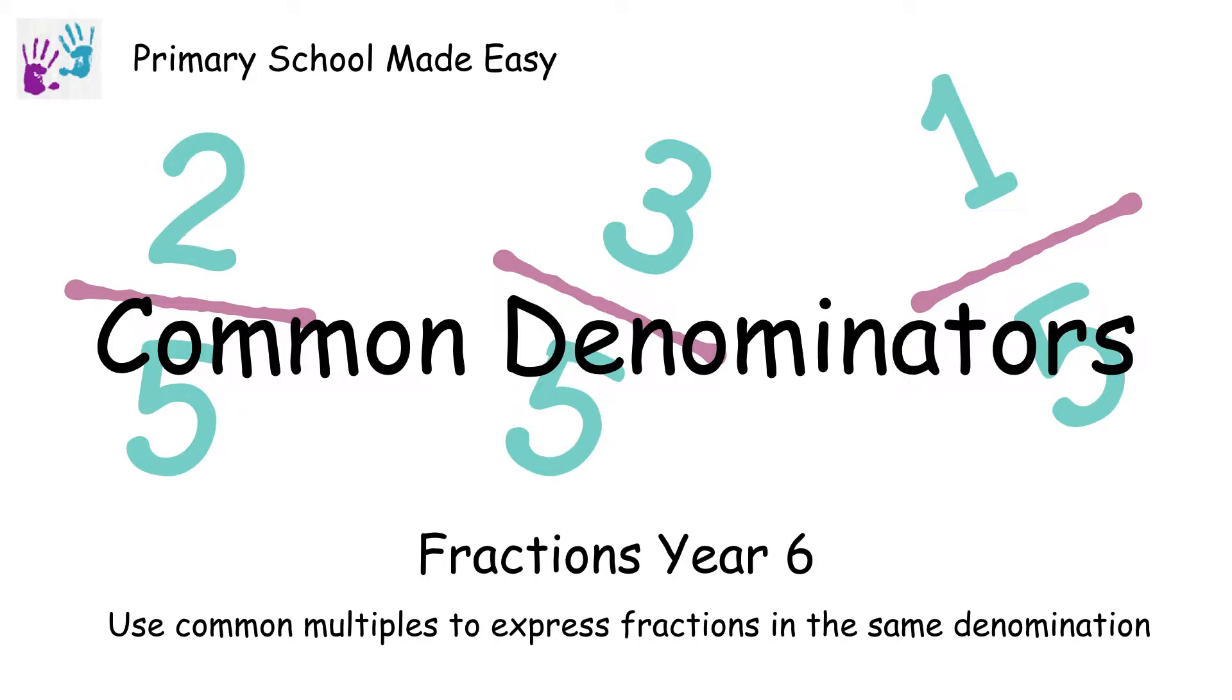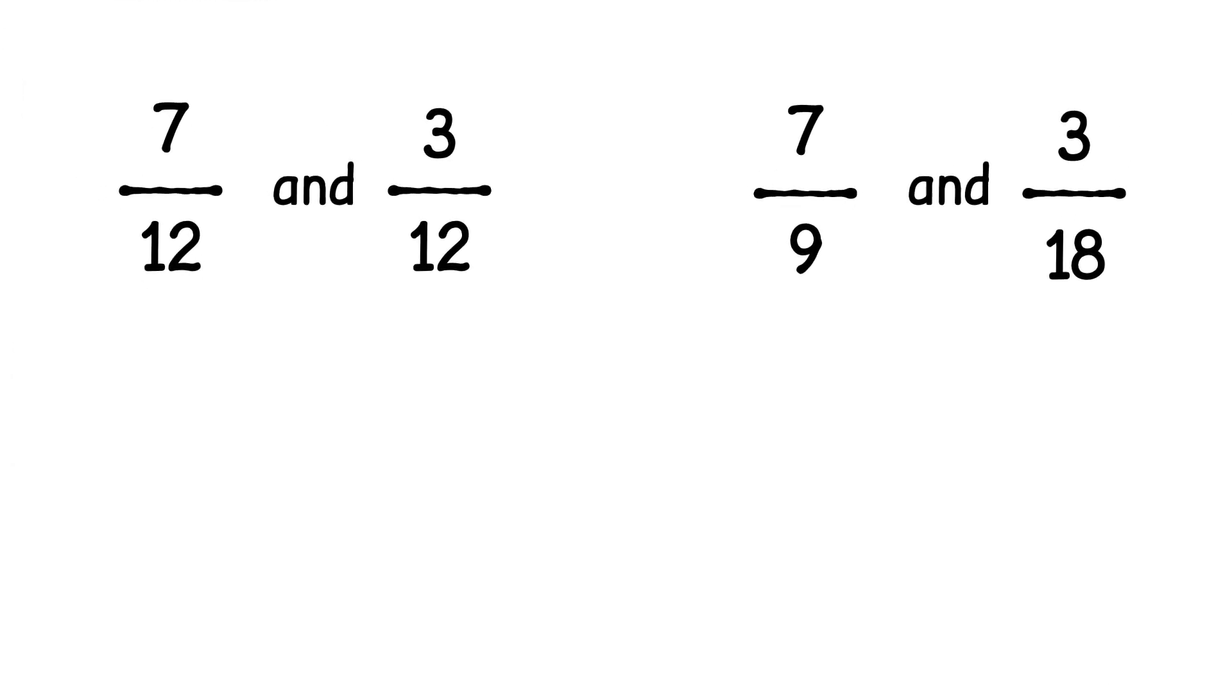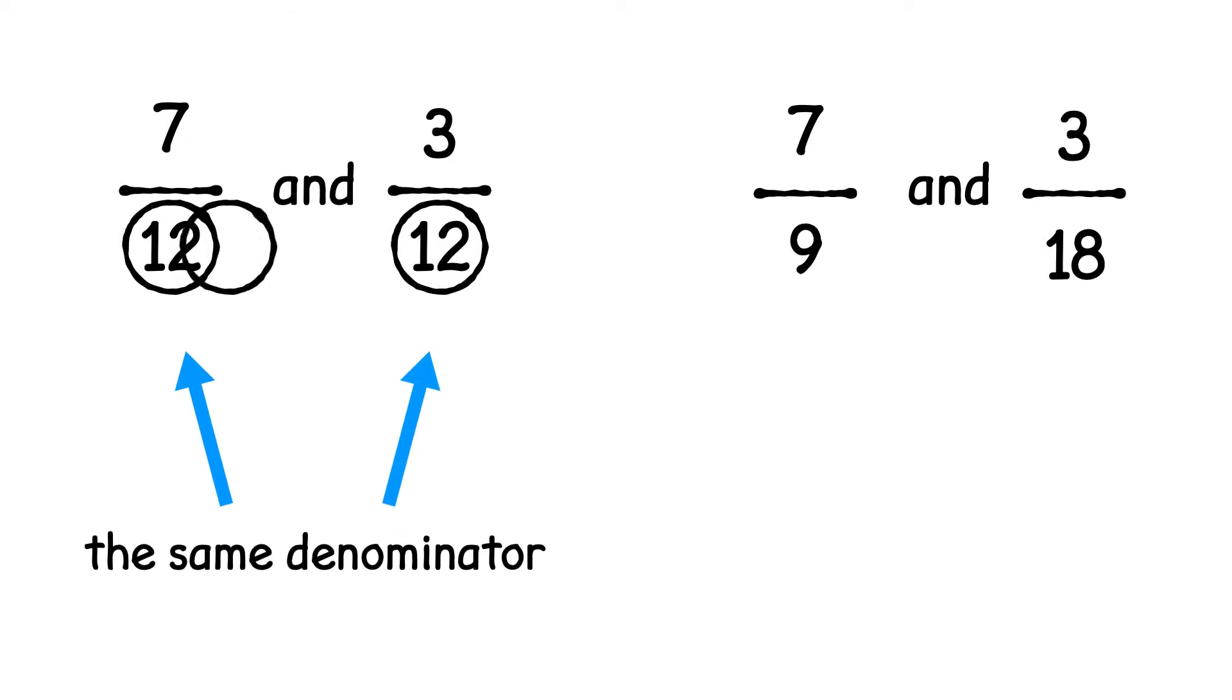Common denominators. Seven-twelfths and three-twelfths have a common denominator. Their denominators are the same - they are both twelve. Seven-ninths and three-eighteenths do not have a common denominator. Their denominators are different.